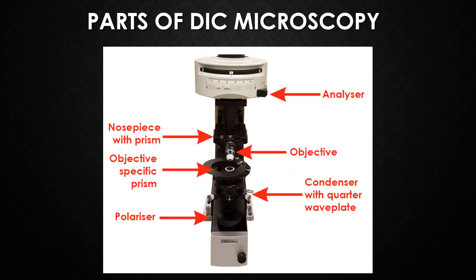This slide shows the image of DIC Microscopy. The DIC Microscope has several important parts. It includes the polarizer, condenser, objective, objective-specific prism, Nomarski prism, analyzer, and it also has the specimen slides and vessels.